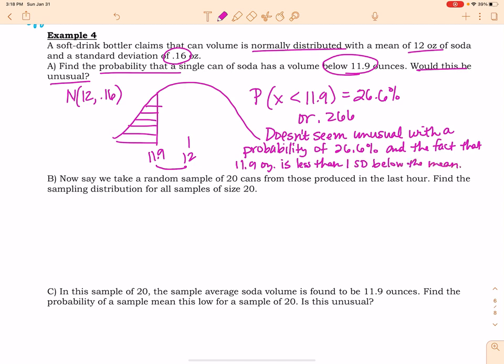Okay, let's look at part B. Now say we take a random sample of 20 cans from those produced in the last hour, and I now want to find the sampling distribution for all samples of size 20. So in other words, I want to know what my parameters are going to be for a sample size of 20. So the sampling distribution for all samples of size 20 means I want to know the new parameters, because my standard deviation will change because I have a different sample size now.